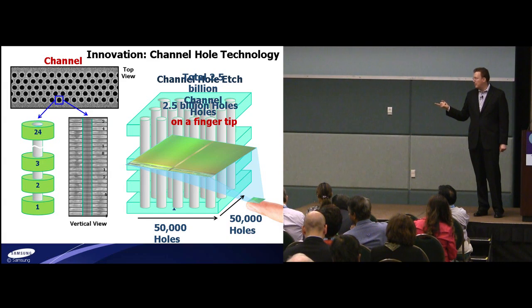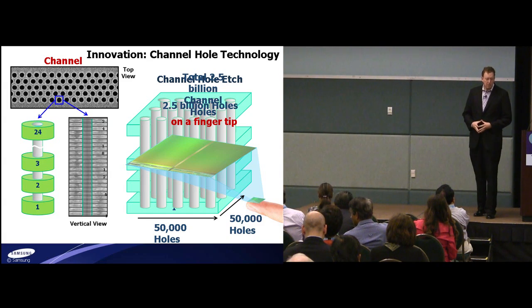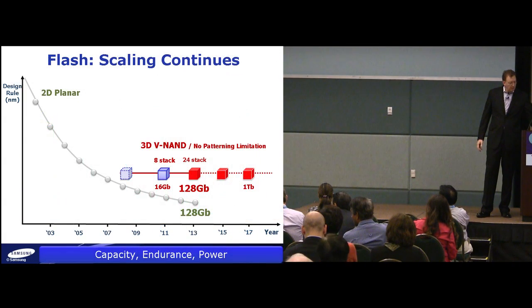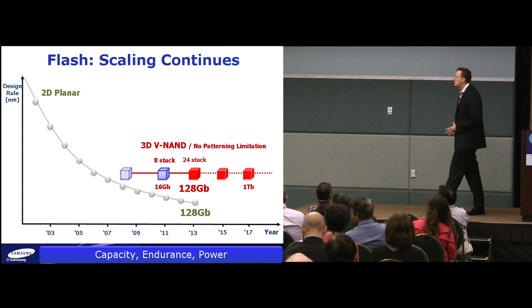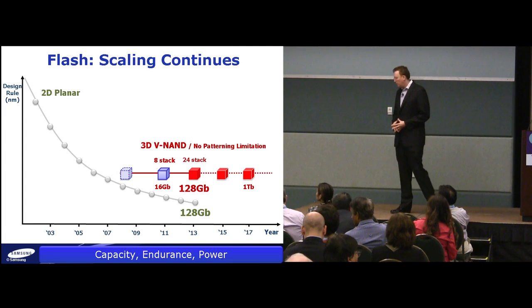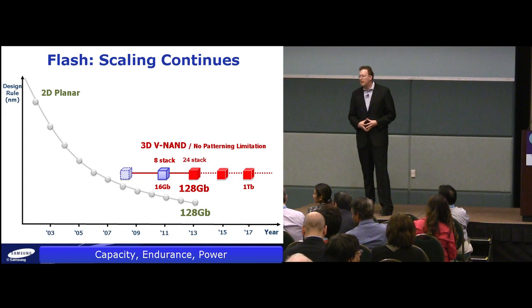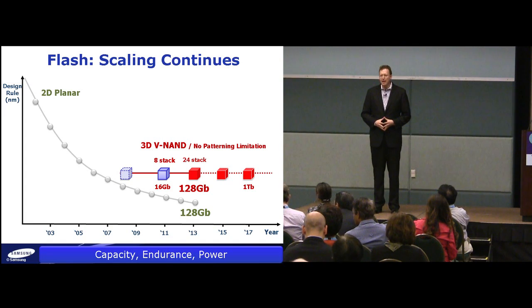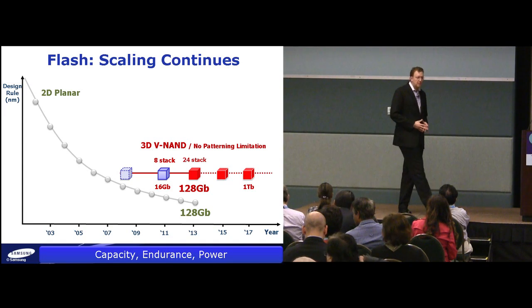That's pretty cool, and we're pretty excited about it because we believe this is a breakthrough in technology. The significance to the people in this room who design systems is that we believe we're going to be able to continue to scale in flash. Today, we've already announced the first 128 gigabit device and we have a SATA drive. Over time, we're going to enter what we call the era of Terra — terabit devices, terabits flash for terascale systems.